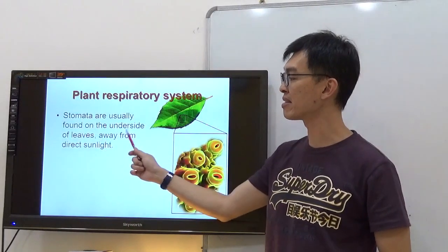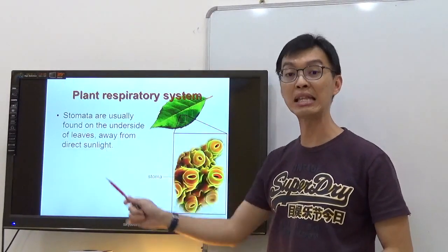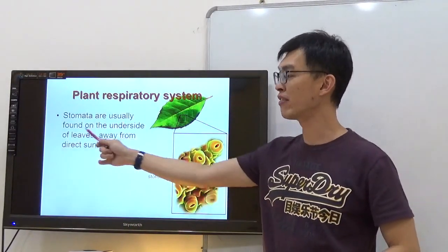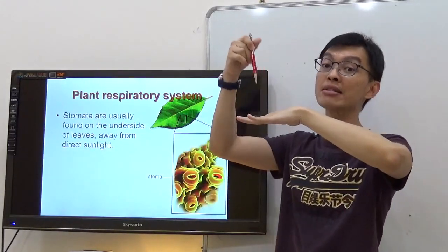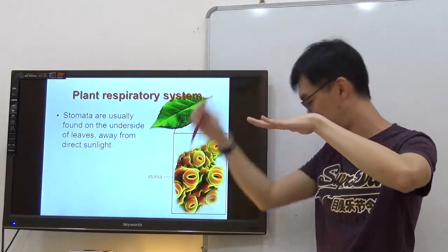Stomata are usually found on the underside of the leaves away from direct sunlight. Now remember, usually found doesn't mean that it's only found. It's also found on the surface, just that there is less.